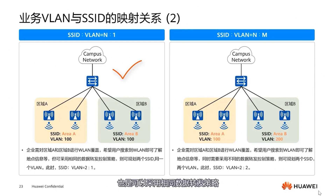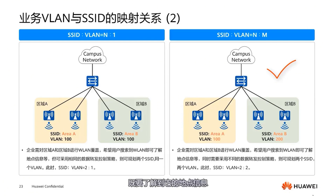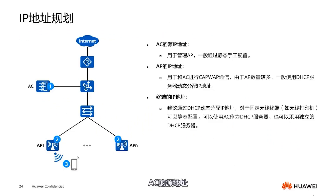Generally, different areas use different VLANs while also adopting the same data forwarding policy. Planning this part also includes IP address planning. Three aspects need focus: the source address of the AC, the IP address of the AP which is our management address, and the IP addresses of the terminals which are our business addresses. The source address of the AC — if it is a layer 2 network, it is the interface address. If it is a layer 3 network, the interface address or a loopback address can be used.